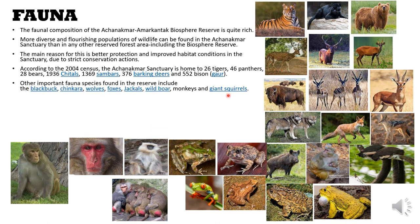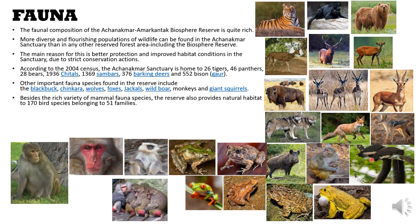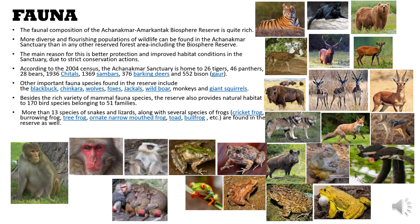Other important fauna species found in the reserve include the blackbuck, chinkara, wolves, foxes, jackals, wild boar, monkeys, and giant squirrels. Besides the rich variety of mammal fauna, the reserve also provides natural habitat to 170 bird species belonging to 51 families, and more than 30 species of snakes and lizards, along with several frog species — including the cricket frog, burrowing frog, tree frog, ornate narrow mouth frog, toad, and bull frog. There are also four varieties of monkeys found here: the langur, red-face monkey, red-hip monkey, and the normal Indian monkey.